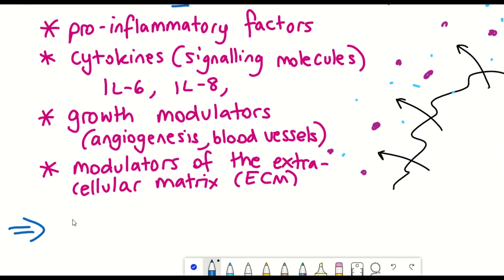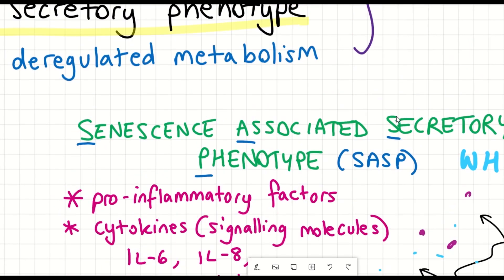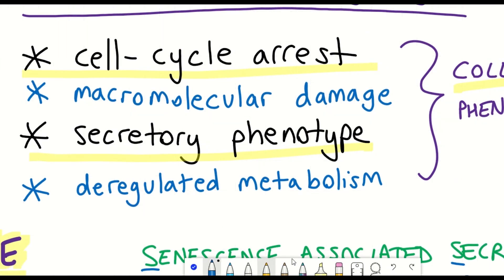For these reasons, there is a lot of interest in understanding the SASP. And in particular, it is known that the strength of the SASP and also the composition of these different factors can vary depending on the context, so the cell type in which senescence occurs, and also the context, including how senescence is induced in the first place.